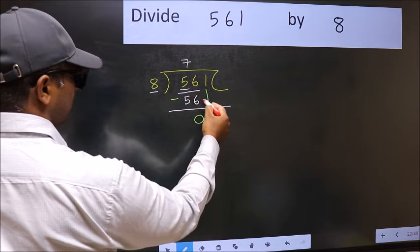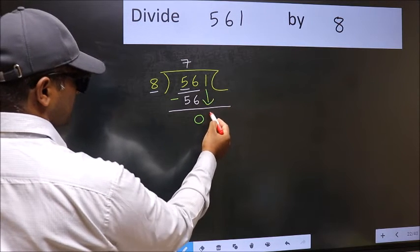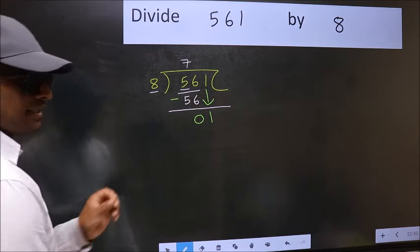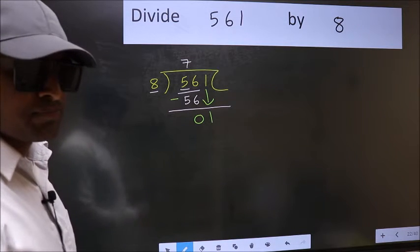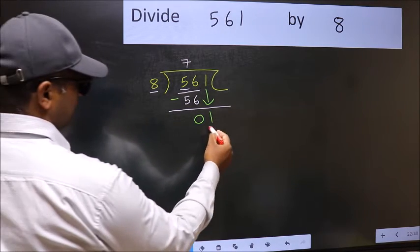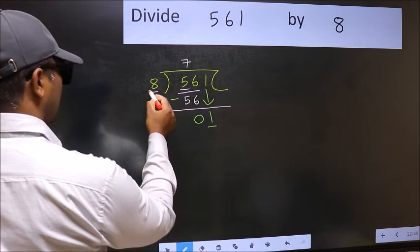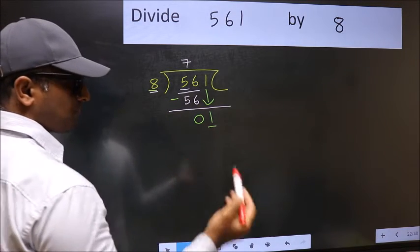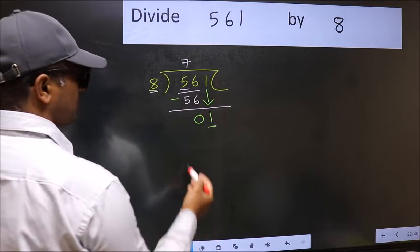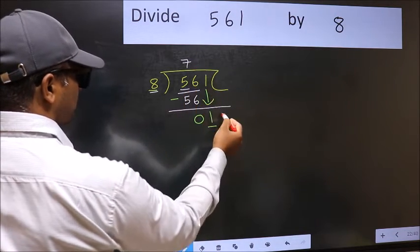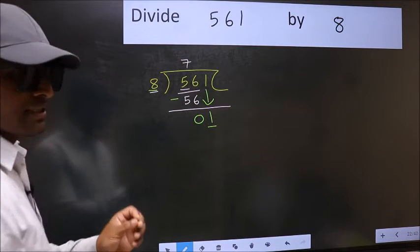After this, bring down the beside number. So 1 down. After this step, the mistake happens. And the mistake is this: here we have 1 and here 8. 1 is smaller than 8. So what many do is they directly put dot and take 0, which is wrong.